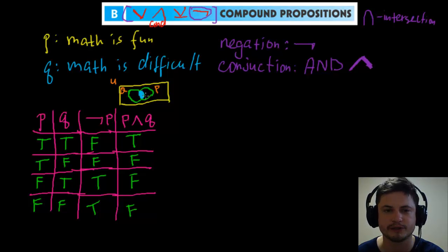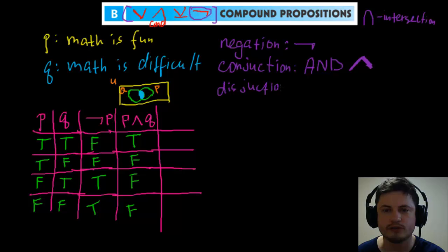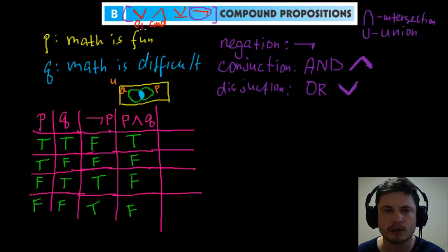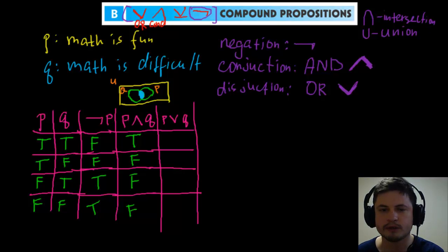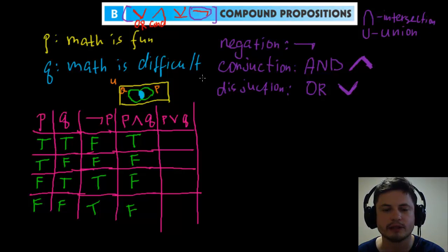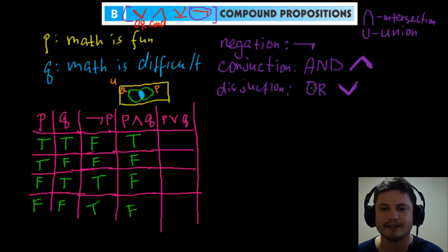Next is disjunction, which means 'or' and is written with this symbol (∨). It's similar to union in Venn diagrams. P or q means either one of them has to be true for the result to be true. The tricky part is that it also includes when both of them are true — so 'or' here means 'one or both.'